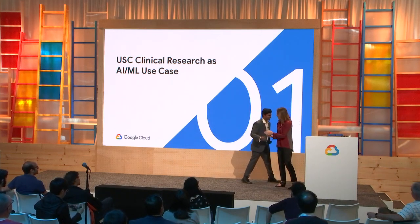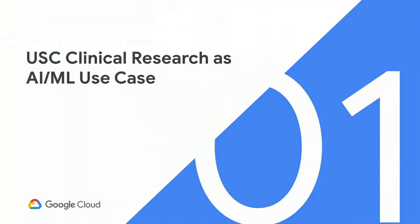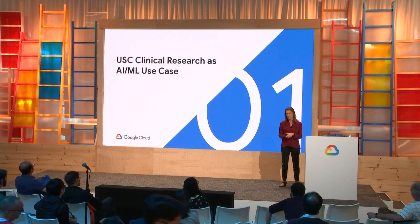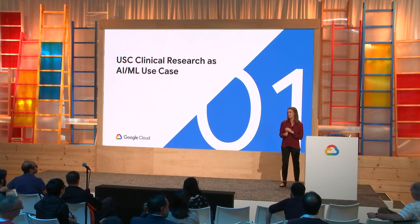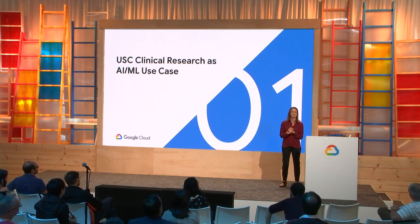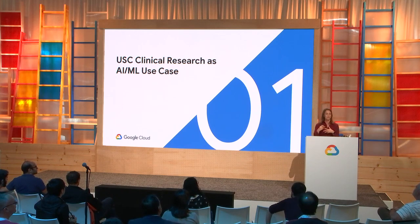Thank you. The University of Southern California is a large private university and academic medical center located in Los Angeles, California. We have strong research programs in many clinical areas, such as cancer, biomedical imaging, neurosciences, stem cells, and many more. Collectively, our researchers conduct at least 200 clinical trials per year, and the goal of those clinical trials is to better understand diseases, as well as create new therapies and new standards of care for patients.